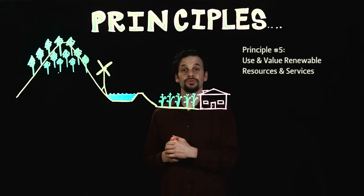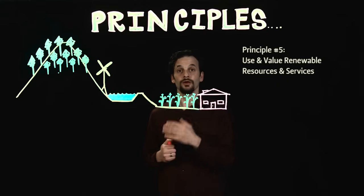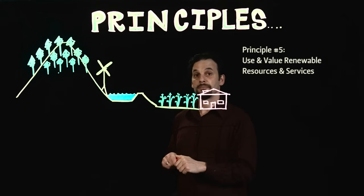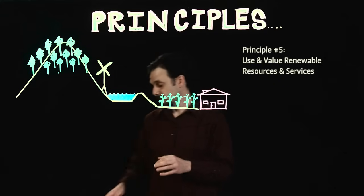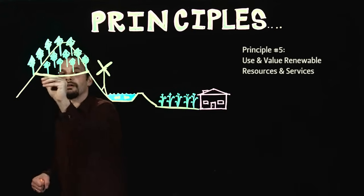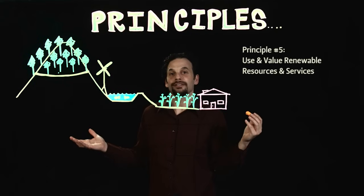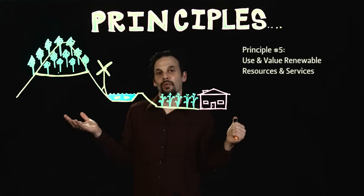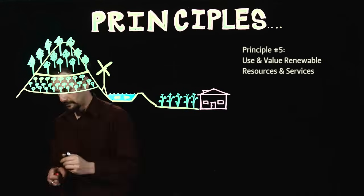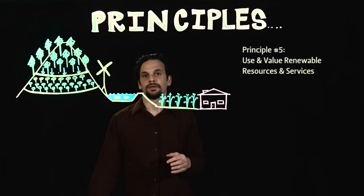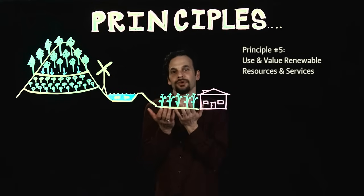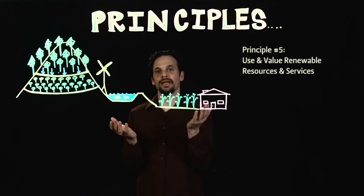Principle 5 is Use and Value Renewable Resources. Renewable resources are those which replenish with modest use. This could be sustainable forestry or fishing practices. It could mean planting an orchard downslope from a forest to take advantage of the nutrient and water drift that continually moves down the hill. This includes the wind and the fact that plants and animals breed — and if we're responsible and careful, many of these resources can provide in perpetuity.